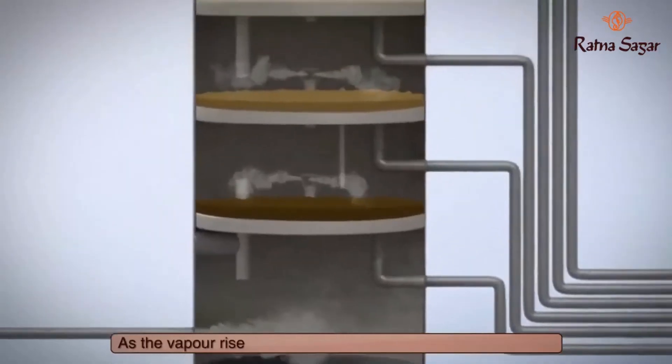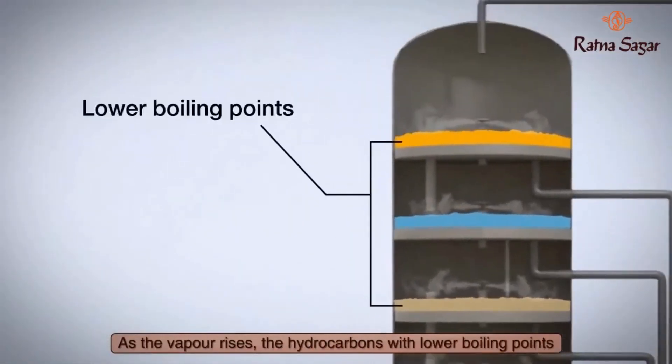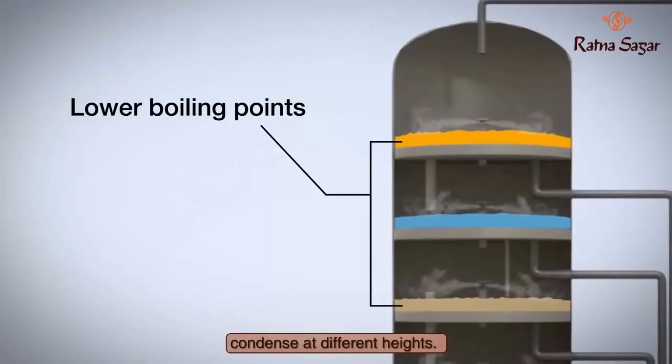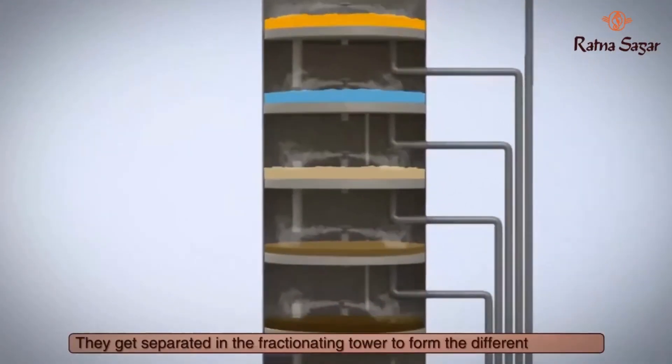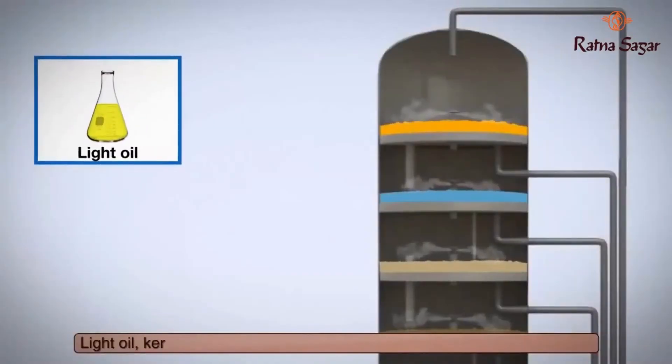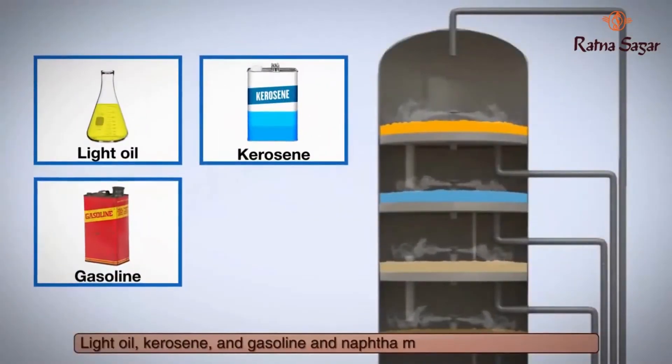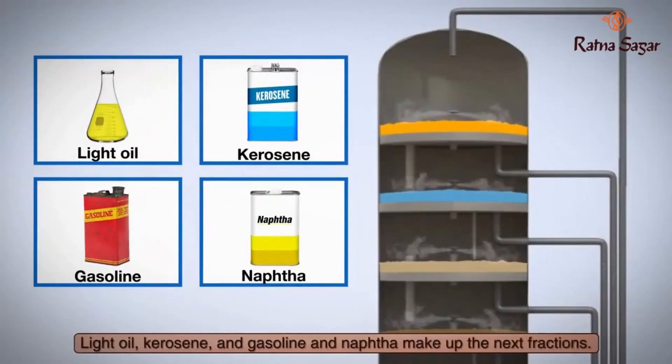As the vapor rises, the hydrocarbons with lower boiling points condense at different heights. They get separated in the fractionating tower to form the different fractions. Light oil, kerosene, and gasoline and naphtha make up the next fractions.